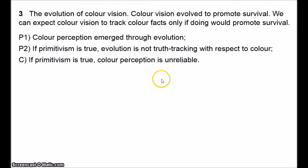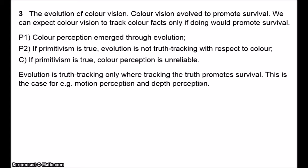So the question is: why should we assume that evolution is not truth-tracking with respect to colour? Evolution is truth-tracking only where tracking the truth improves survival. Consider motion perception — it's obviously helpful to know when things are moving and how fast. If you see something moving towards you very quickly, that's a sign you need to run or duck. Similarly, consider depth perception: we need to know distances, how far away is the animal I'm hunting, how far down is that fall. Detecting motion and depth are obviously important to survival.